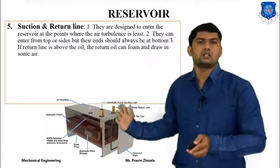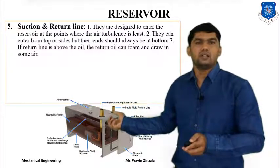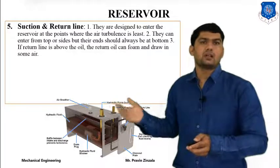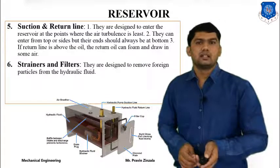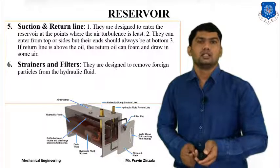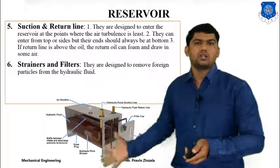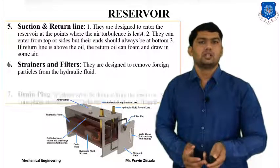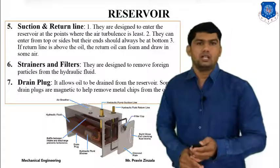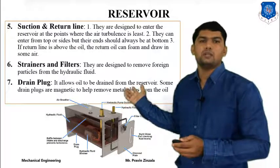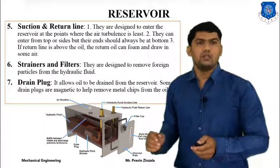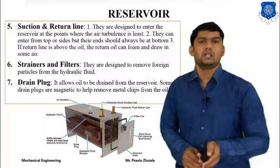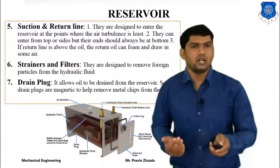In the suction line, a filter called a strainer or inlet filter is attached. At the return line, it is called a return line filter or outlet filter. The strainer is also used at the inlet portion of the suction line to remove foreign particles or contaminants from the system. The drain plug allows oil to drain from the reservoir. During maintenance or when removing contaminants, a drain plug is applied at the bottom of the reservoir and is used to empty the fluid.